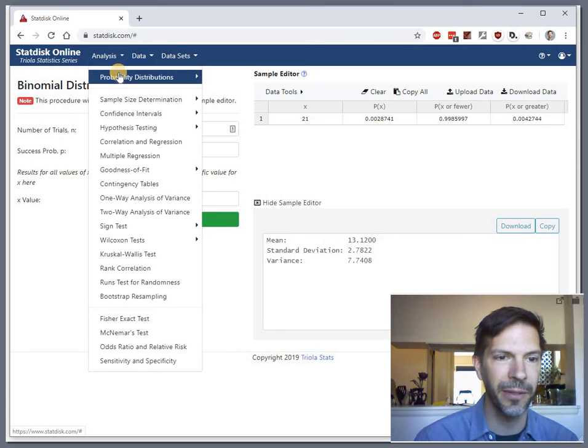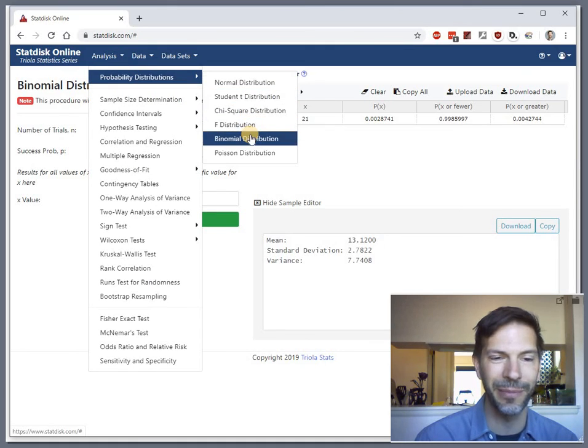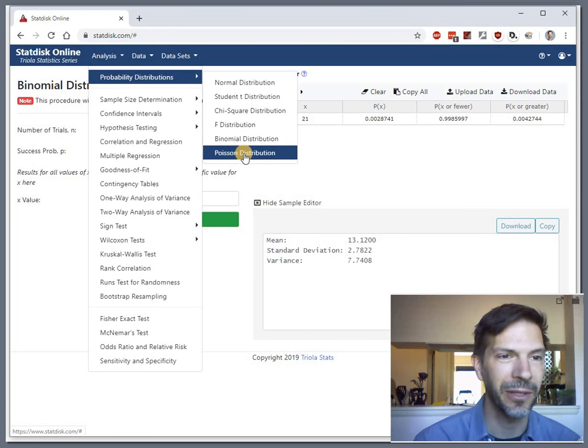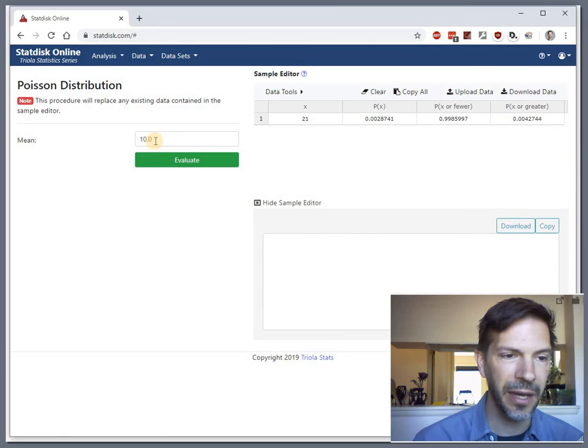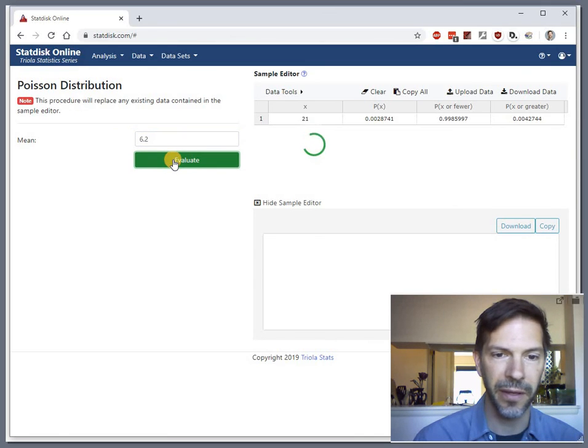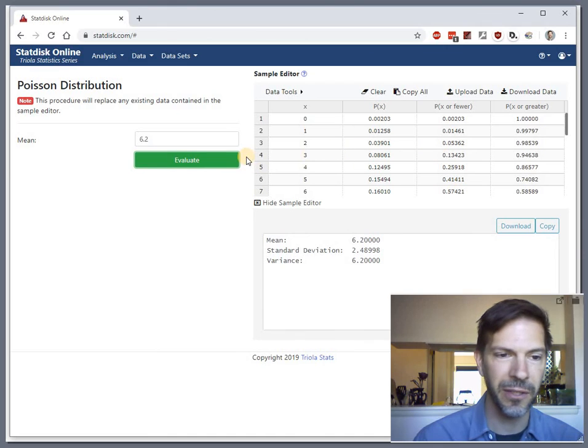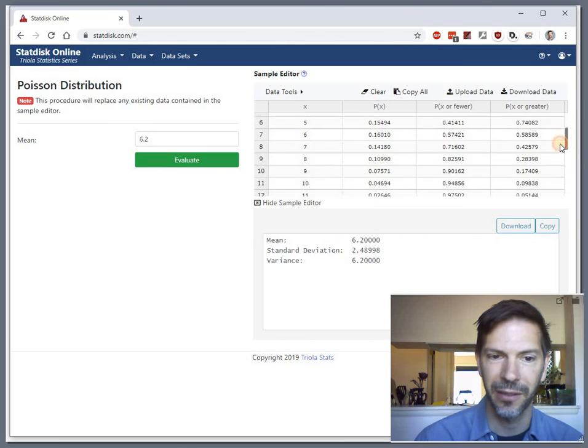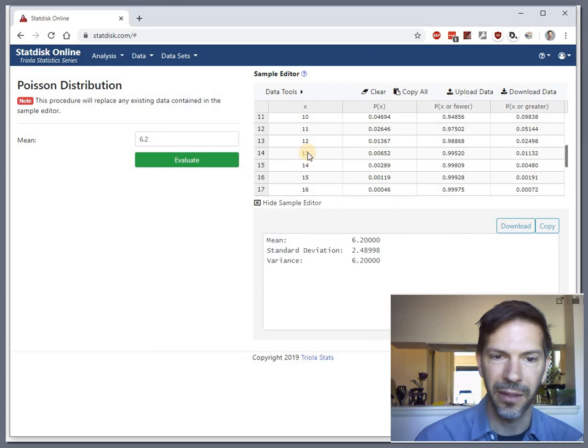Let's go back to StatDisk. This time, under probability distributions, we're not heading for the binomial anymore. We're heading for the Poisson. So click Poisson. It just asks you for the mean or the average. So our average is 6.2. Click Evaluate. It doesn't give you the option to say 12. It just gives you the whole list here. We need to scroll down a little bit. X is what we're looking for. Don't get confused by the column or row labels. X is the number of successes. So if we're looking for 12 sightings, the probability of getting 12 is 0.0137.